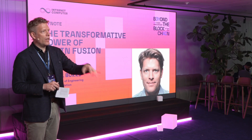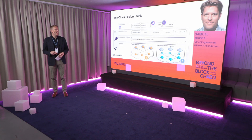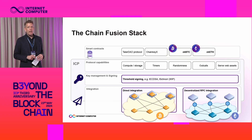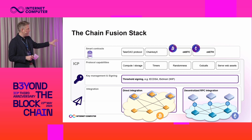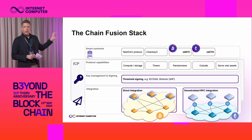The second component is the integration layer that interacts with other chains. We distinguish two approaches. One is the direct integration, where we run nodes of the other chain on ICP nodes — this is what we use for the Bitcoin integration, where Bitcoin nodes are actually run alongside ICP nodes. The other approach is the decentralized RPC integration, where ICP nodes make decentralized calls to RPC providers that then call out to the network we integrate with.